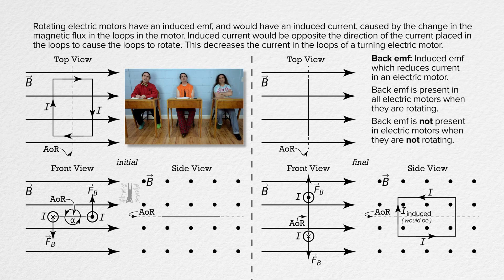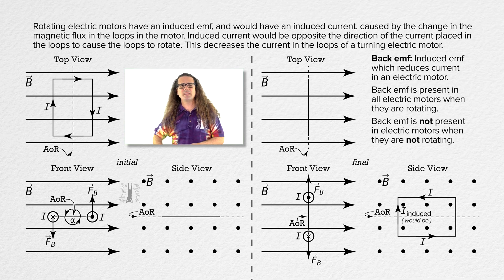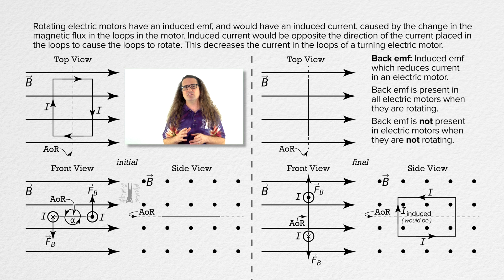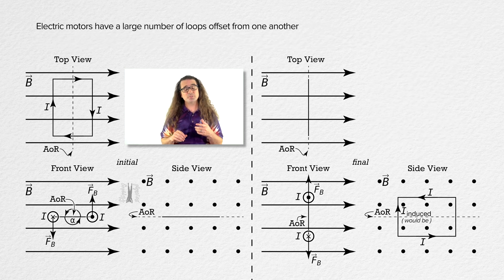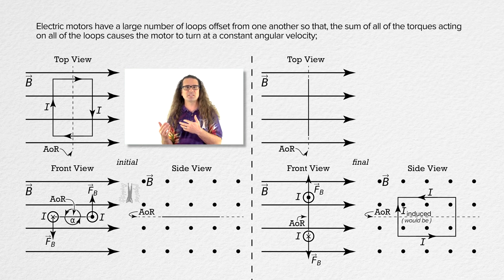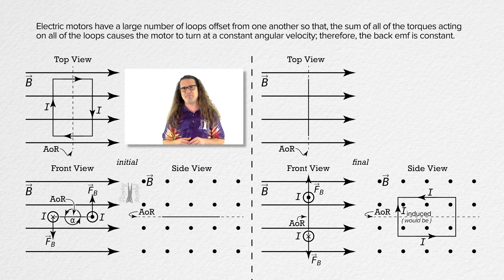Why would the back EMF be constant when the motor is rotating at a constant angular velocity? If a current carrying loop is rotating in a magnetic field like you showed us, then the back EMF should be increasing and decreasing as the magnetic flux through the loop changes as it rotates in the magnetic field. Well, I don't think it's worth getting into all the specifics about how a direct current electric motor works. What I'll say is that it includes a very large number of loops which are offset from one another to make it so that when you add up all the torques acting on all of the loops, the motor turns at a constant angular velocity and therefore the back EMF has a constant value.